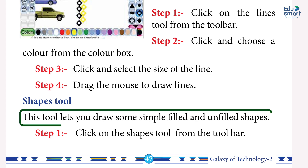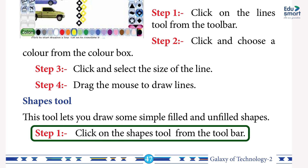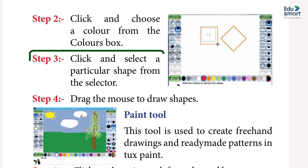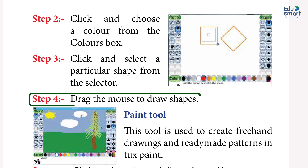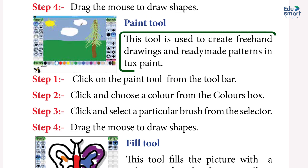Shape tool — this tool lets you draw simple filled and unfilled shapes. Step 1: click on the Shape tool from the toolbar. Step 2: click and choose a color from the color box. Step 3: click and select a particular shape from the selector. Step 4: drag the mouse to draw shapes.